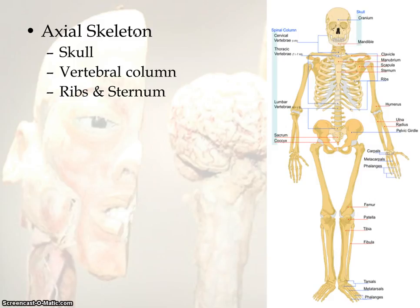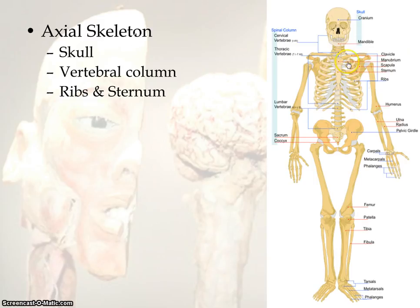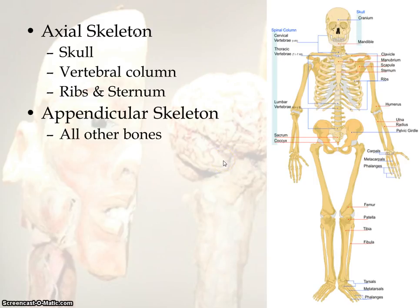Let's look at some parts of our skeleton. The axial skeleton is the part that includes the skull, the vertebral column, and your ribs and sternum. Looking at a picture, the upper part of the skeleton minus the shoulders and arms — the skull, the vertebral column, and the ribs — makes up the axial skeleton. Your appendicular skeleton is going to be all the other bones: your shoulder bones, arm bones, pelvis, legs, feet, and hands.